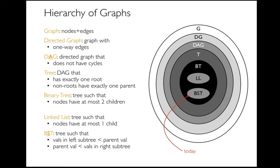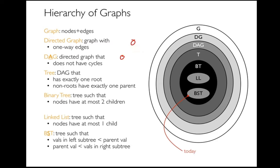A tree is a type of DAG that has exactly one root, and except for the root, every node has exactly one parent. You can imagine things that are DAGs but not trees — for example, if I have four nodes that branch out and then come back together, that would be a DAG that is not a tree. But every tree is a DAG. A linked list is a subcategory of binary tree, since if you have at most one child it's also true that you have at most two children.